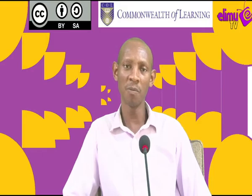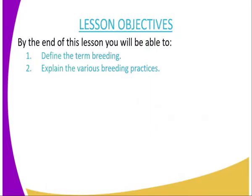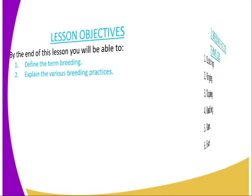On to the lesson objectives. By the end of this lesson, you should be able to: number one, define the term breeding; and number two, explain the various breeding practices carried out during livestock production.